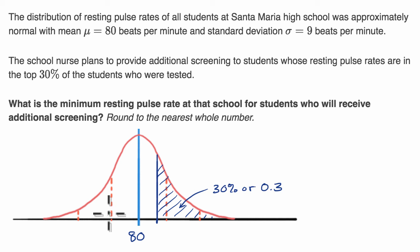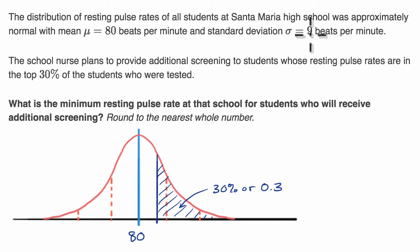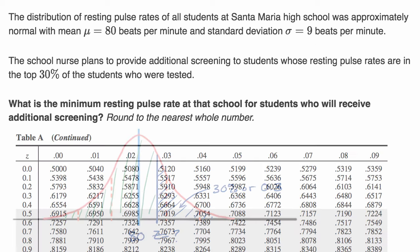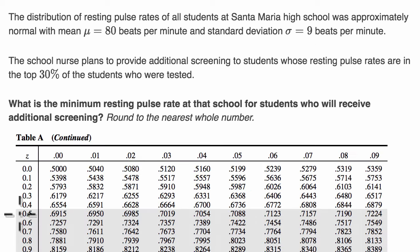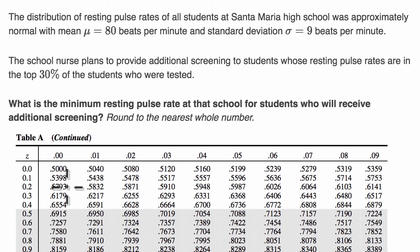What we can do is use a z-table to find for what z-score is 70% of the distribution less than that value. Then we can take that z-score and use the mean and standard deviation to come up with an actual value. In previous examples, we started with the z-score and looked for the percentage. This time, we want a cumulative percentage of at least 70%, and then find the corresponding z-score. Since we are to the right of the mean, we're going to have a positive z-score.